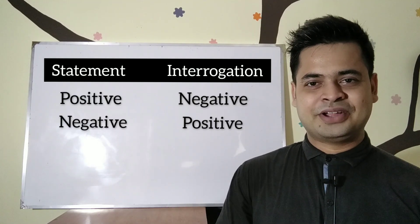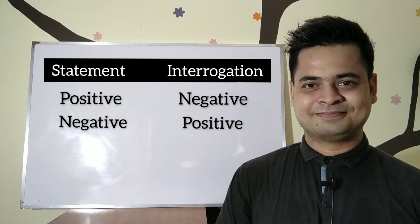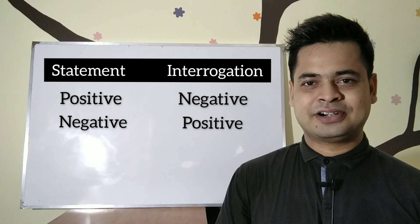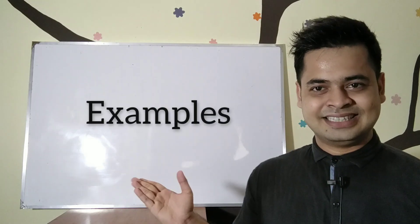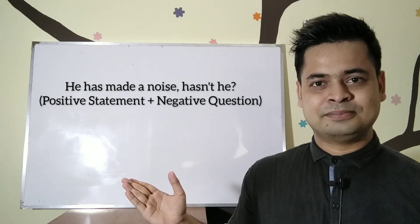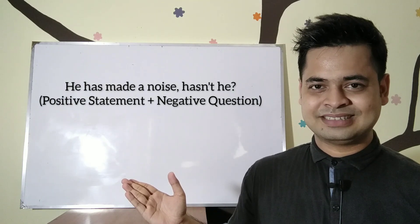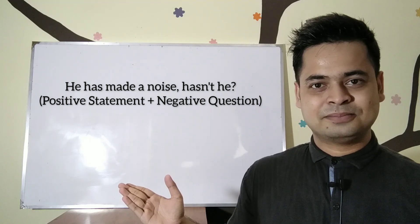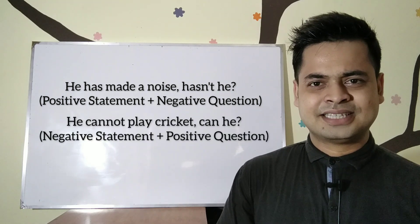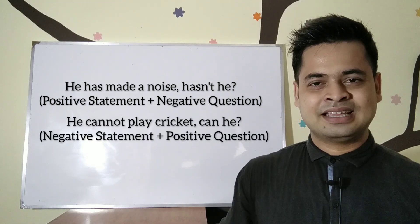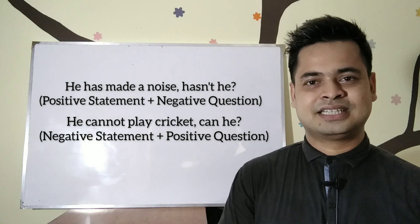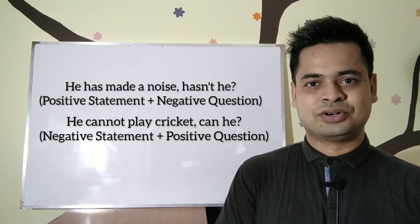When a statement is positive, we have to write a negative question tag. When the statement is negative, we have to write a positive question tag. For example: 'He has made a noise, hasn't he?' — the statement is positive so we used a negative question tag. Another example: 'He cannot play cricket, can he?' — the statement is negative, so we wrote a positive question tag.